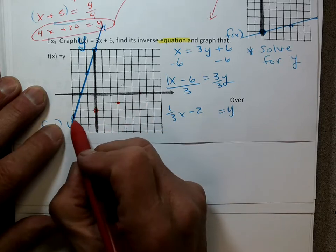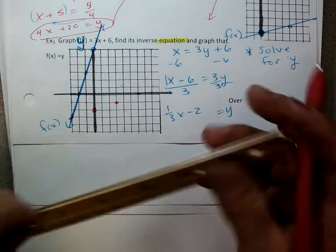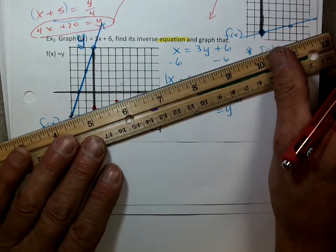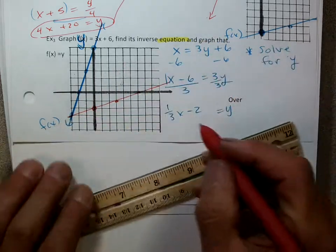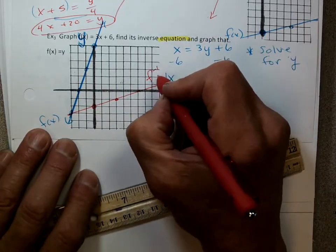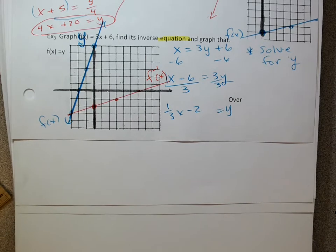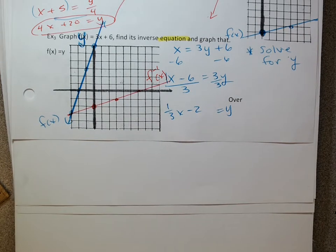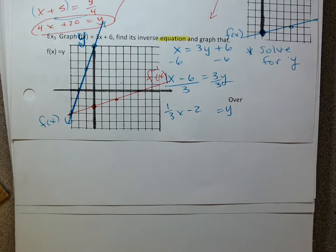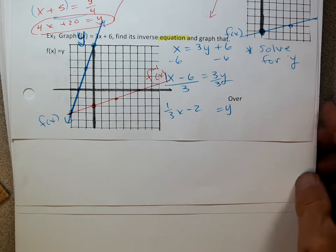So I get y equals one-third x minus 2. There's a 1 there, so I'd have one-third x minus 2. I can graph that: start at negative 2, go up 1 over 3. Here is my inverse line, f inverse of x. Not too bad. It really comes down to doing one thing: switch the x and y's. Either switch the x and y coordinates of a point, or switch the whole x with every y and graph it from there.